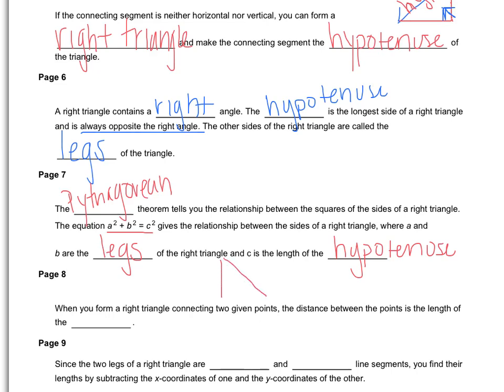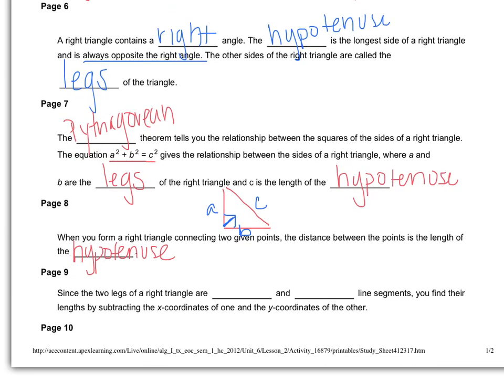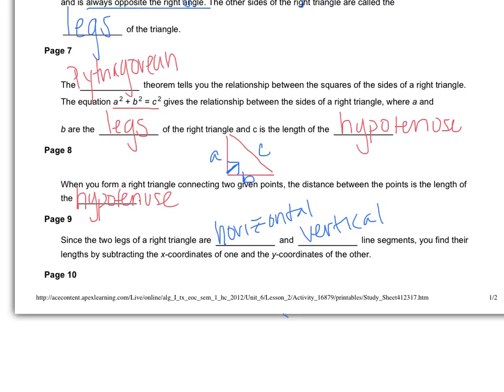So what that's telling us is if I have a right triangle here, we could call this side a and the bottom b and this side would be c because our hypotenuse, wherever the right angle is pointing, is always c. When you form a right triangle connecting two given points, the distance between the points is always the length of the hypotenuse. So since the two legs of a right triangle are horizontal and vertical line segments, you find their lengths by subtracting the x-coordinates of one and the y-coordinates of the other.